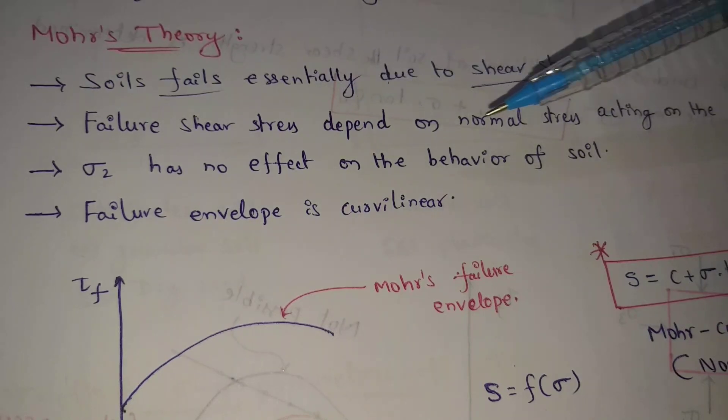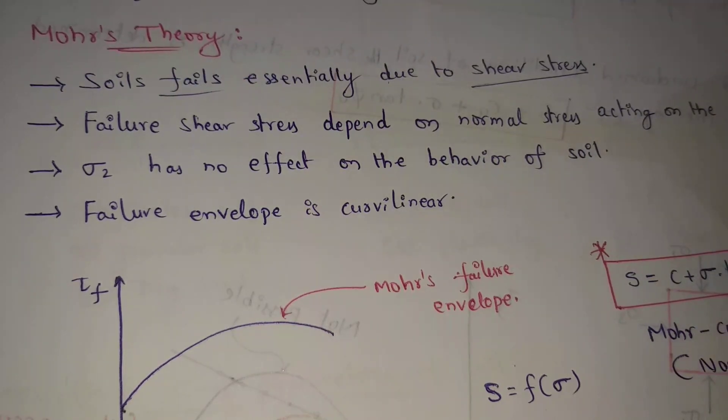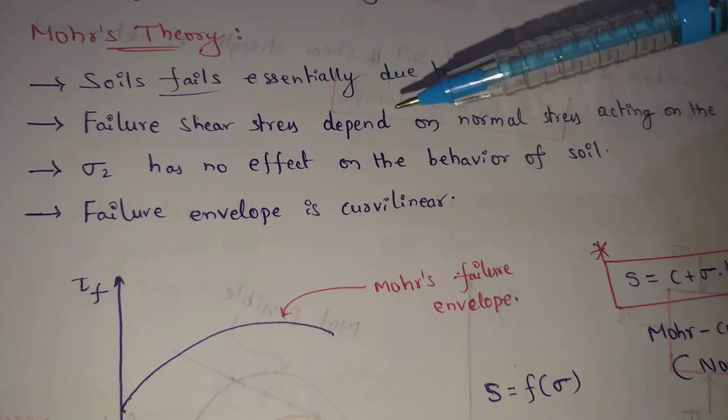Third one, sigma 2, intermediate principal stress, has no effect on the behaviour of soil.